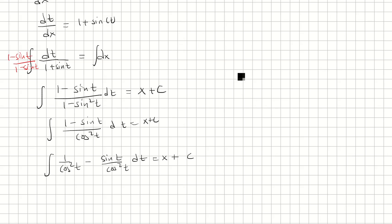1 over cosine squared is secant squared. And then sine over cosine squared is the same thing as sine over cosine, which is tangent, times 1 over cosine, which is secant.